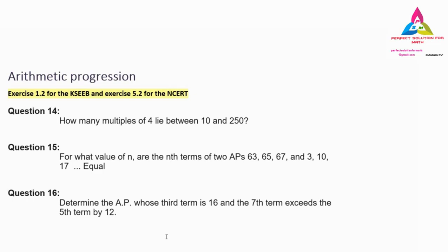Question number 14 is: how many multiples of 4 lie between 10 and 250? Question 15: for what value of n are the nth terms of two APs — 63, 65, 67... and 3, 10, 17... — equal? Question 16: determine the AP whose third term is 16 and the 7th term exceeds the 5th term by 12. We will solve them one by one.